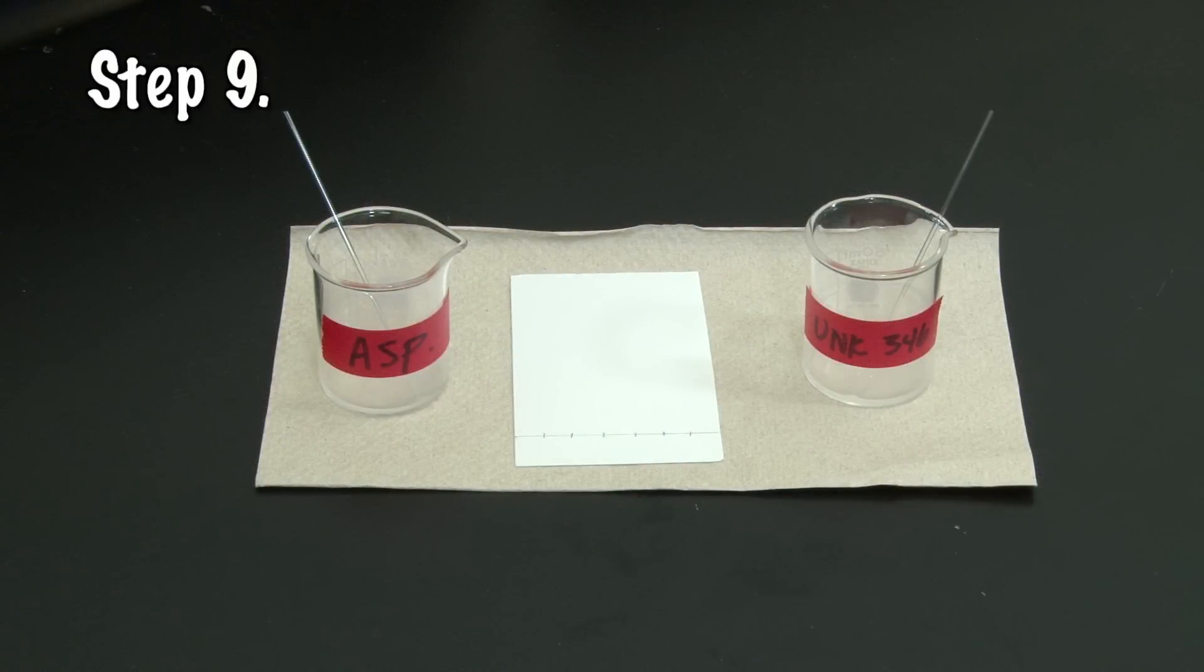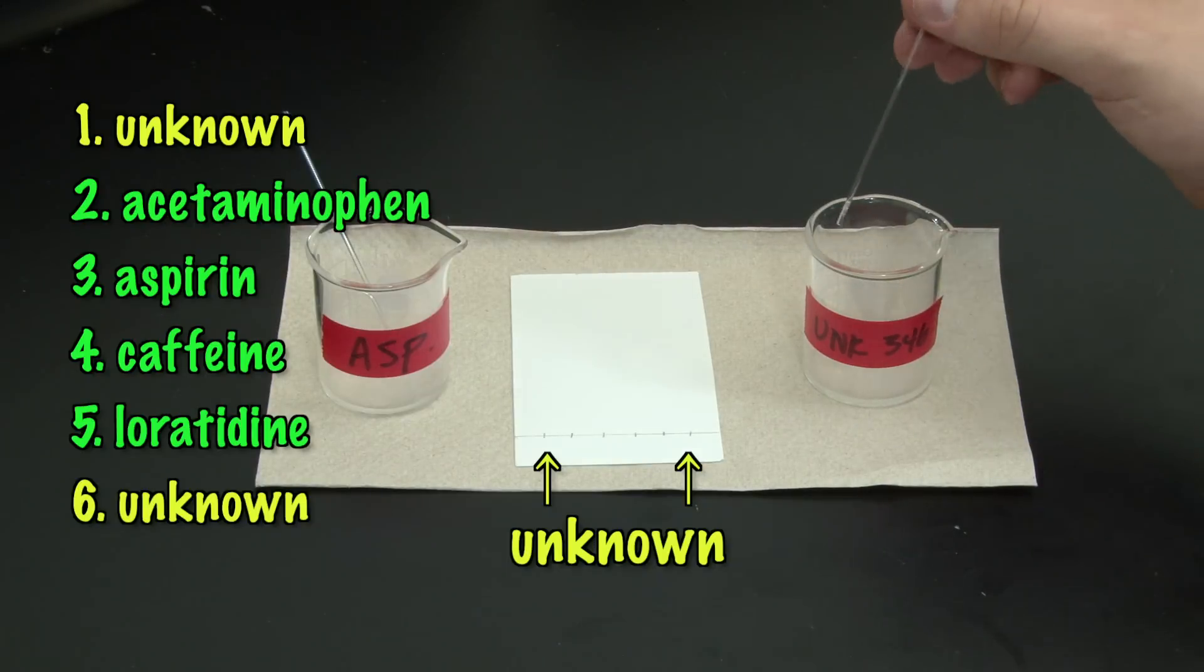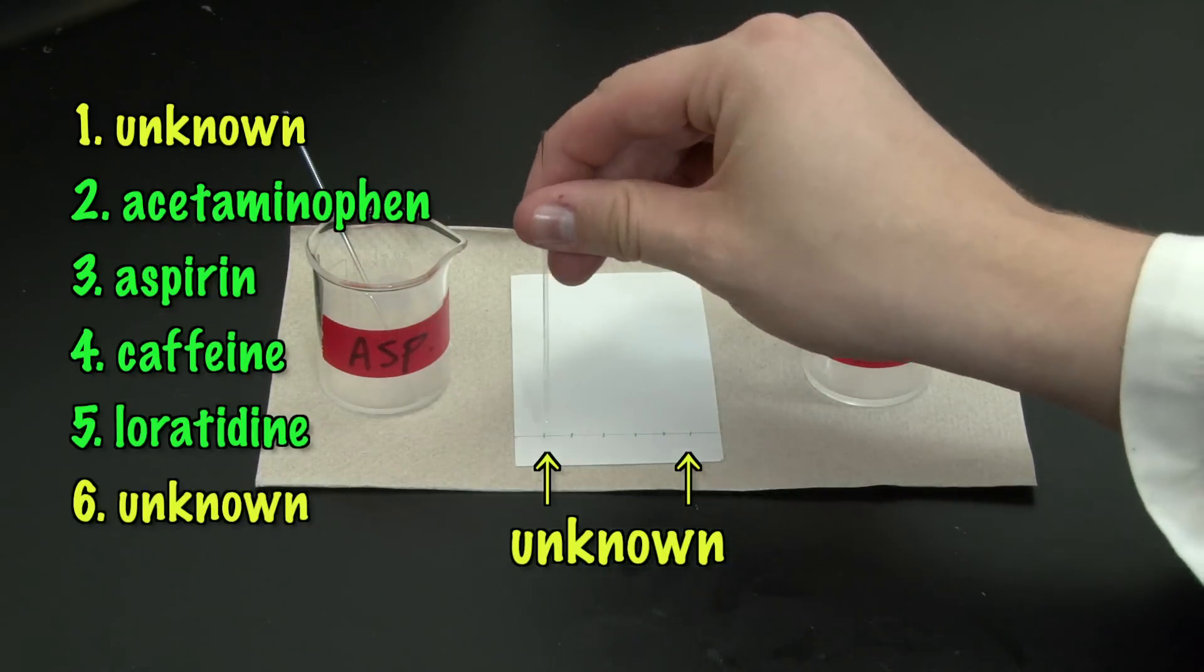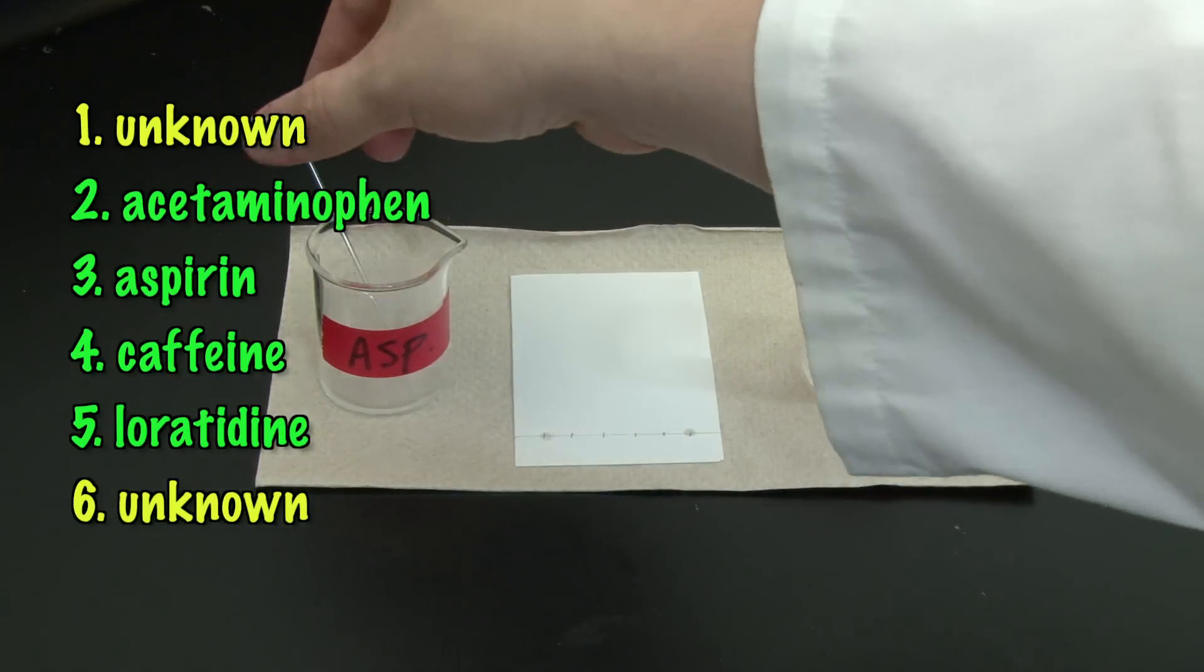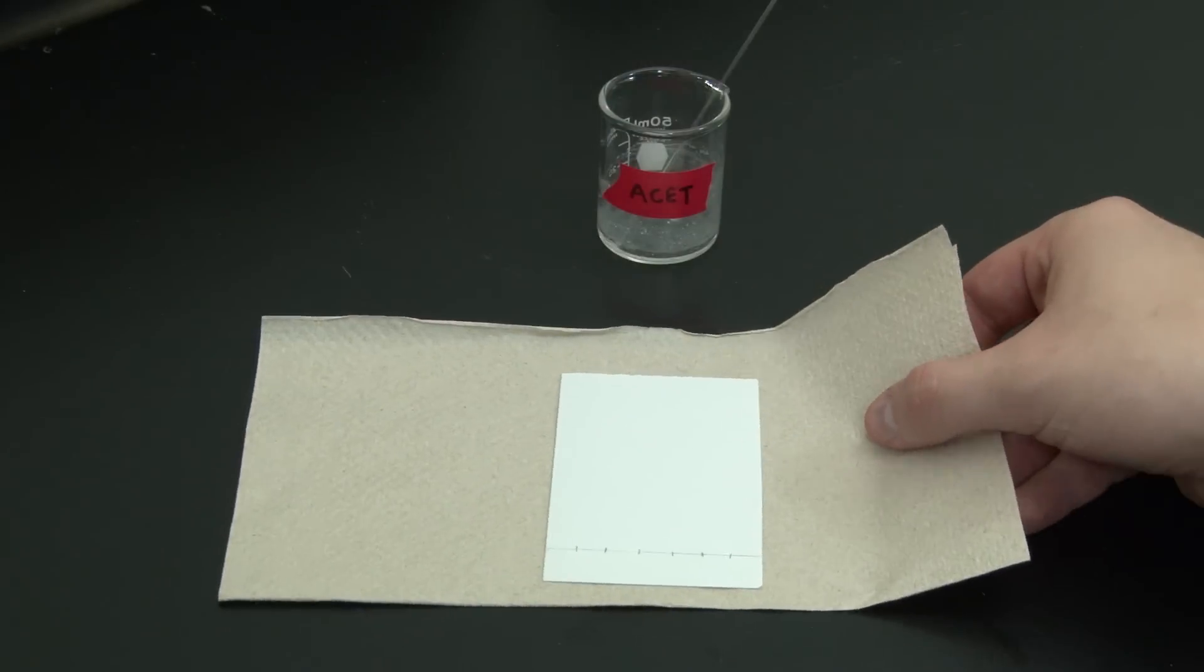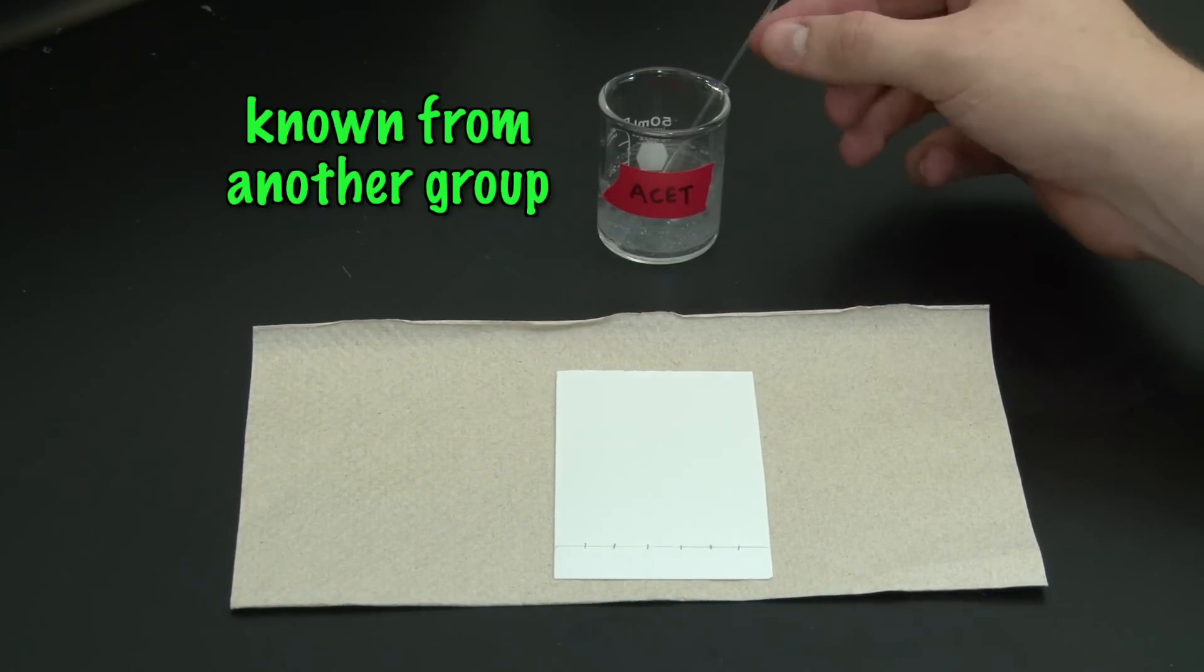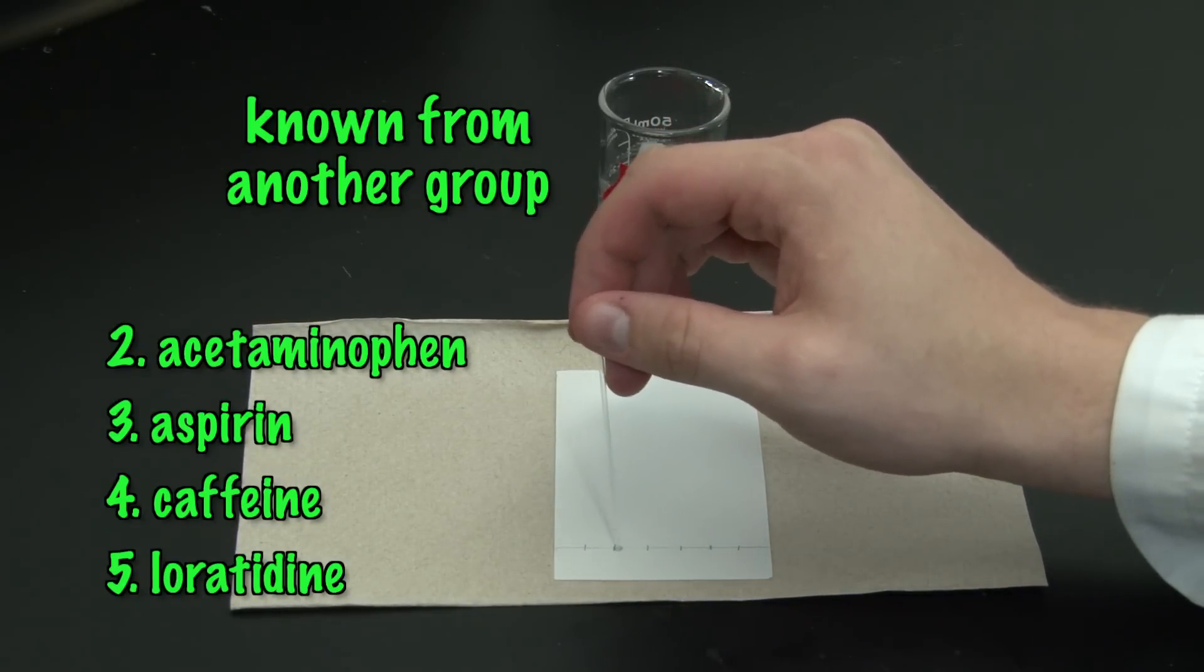Now, apply the known and unknown drug samples to your TLC sheet in this order. Your unknown will be in the outermost positions, 1 and 6, and the known samples that you and your classmates prepared will be in the inner positions, 2 through 5. This way, your unknown is spotted on both sides of the knowns you're comparing it to. Spot your unknown in positions 1 and 6, and spot the known that you prepared in its correct position. Then, take your TLC sheet around the room, using the known samples that other groups prepared, until you have all the samples spotted on your TLC sheet in their correct positions.